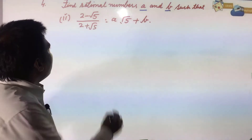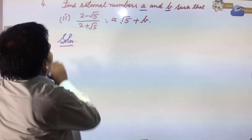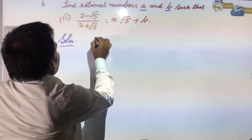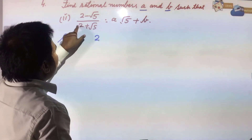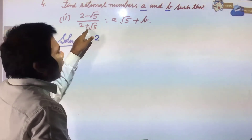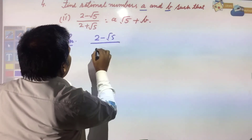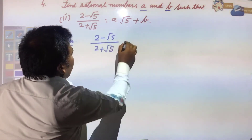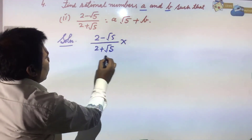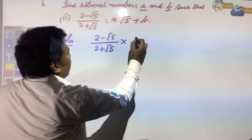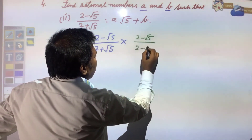We need to rationalize the denominator. The rationalizing factor of 2 + √5 will be 2 - √5. So (2 - √5)/(2 + √5) is required to be rationalized by multiplying by (2 - √5)/(2 - √5).